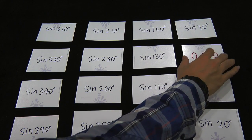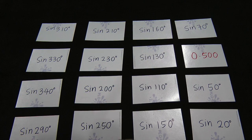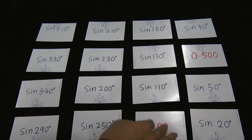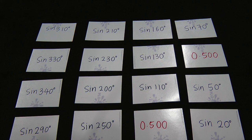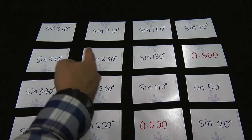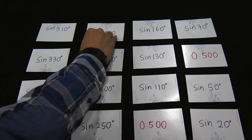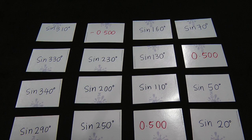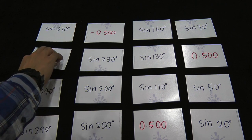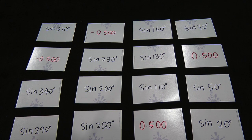If this is 30 degrees, I know in the second quadrant sine 150 will give me the same value, 0.5. In the third quadrant, sine 210 will give me the same value but with a negative sign. And of course the last one will be sine 330, which also gives negative 0.5. I don't memorize this — it's because I understand the relationships.